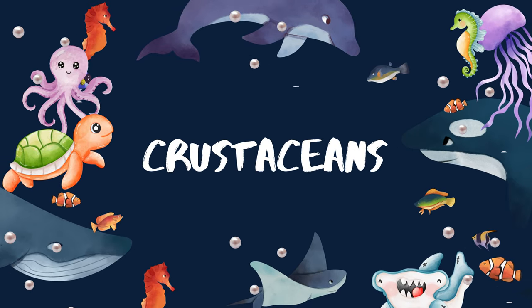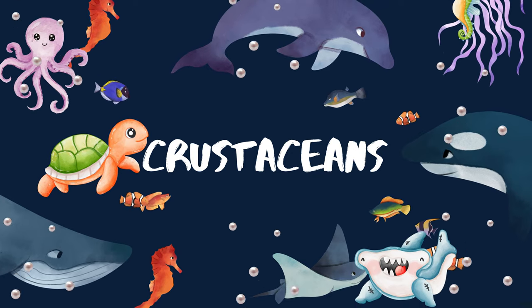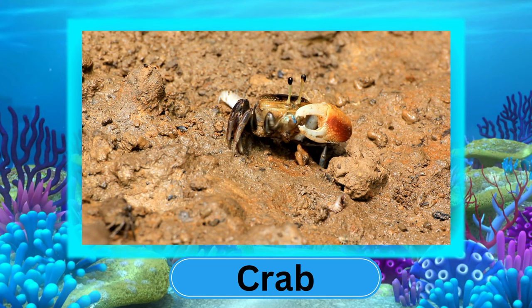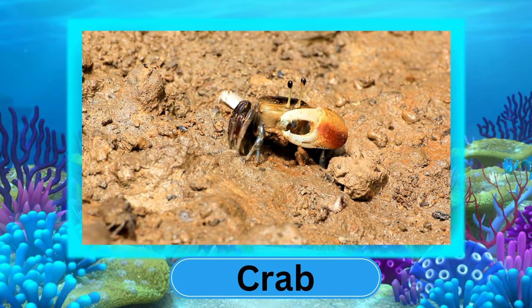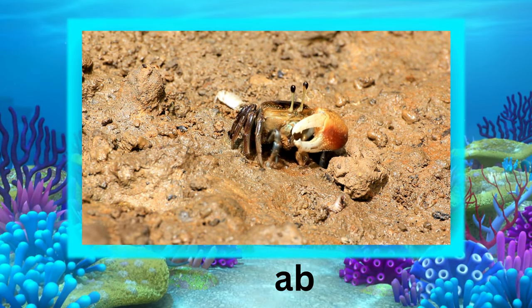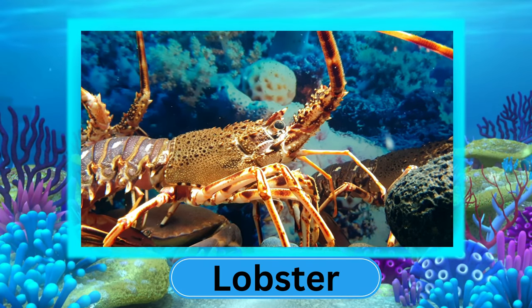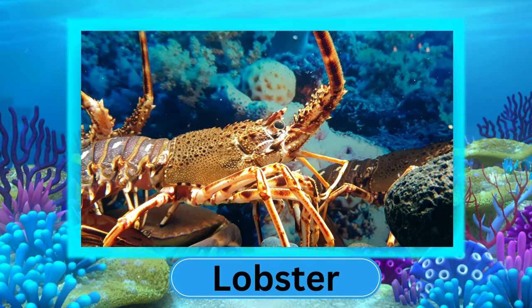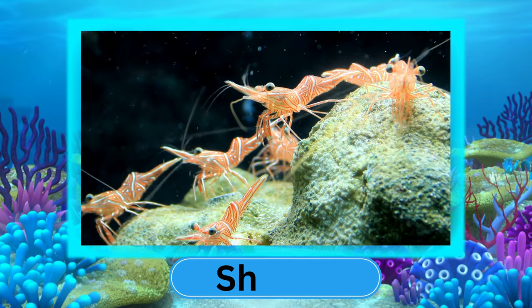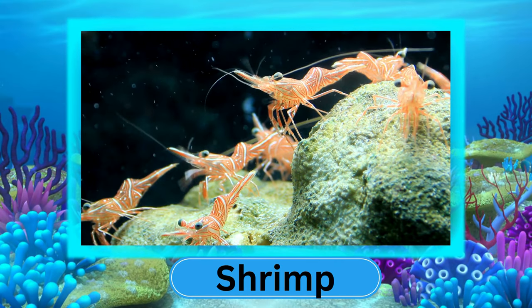Crustaceans. Crustaceans are a large group of arthropods. Let's see some common examples: Crab, Lobster, and Shrimp.